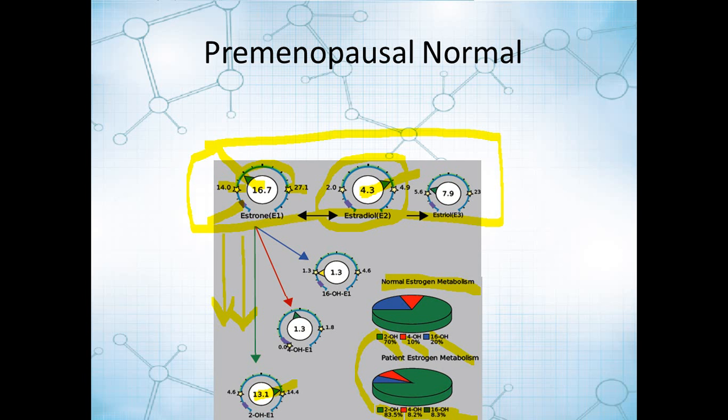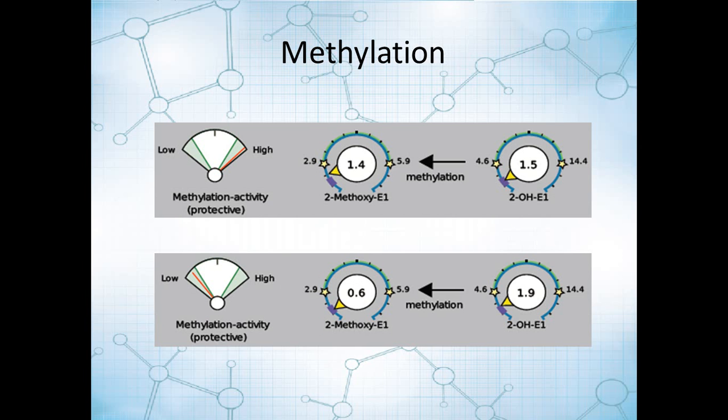If all of these metabolites are lower within the reference range than E2, than E1, then it can represent sluggish phase 1 metabolism, where even if you've got appropriate percentages of the metabolites, if it's just not going to those metabolites, sometimes that's a pattern that you'll notice in terms of addressing why the estrogens might be on the higher side of normal.